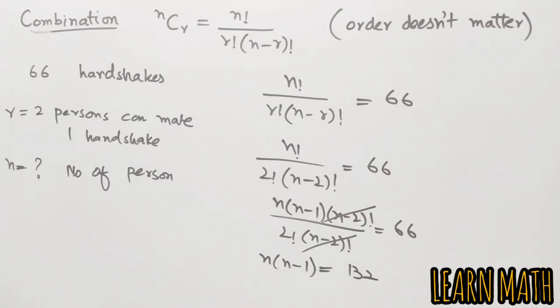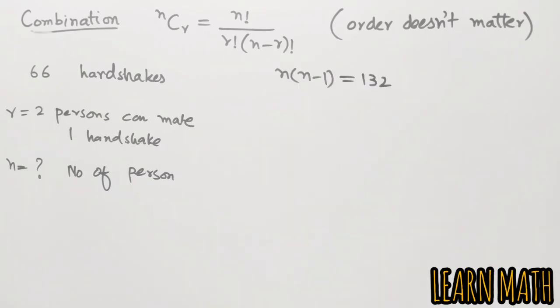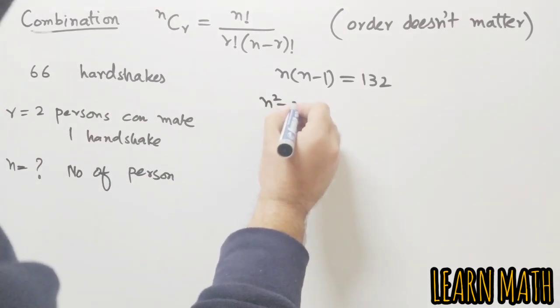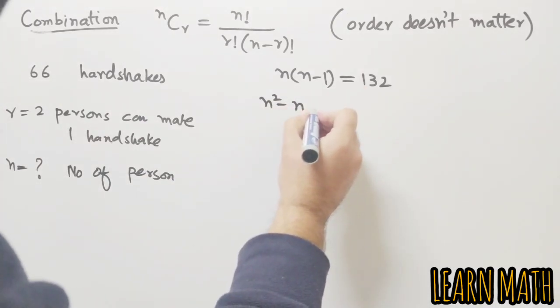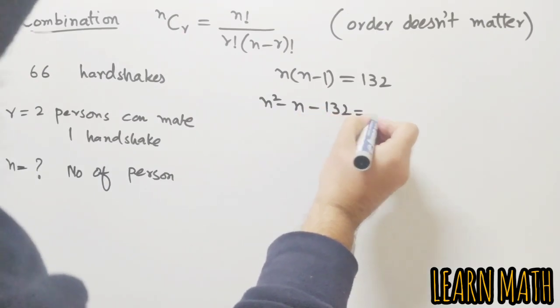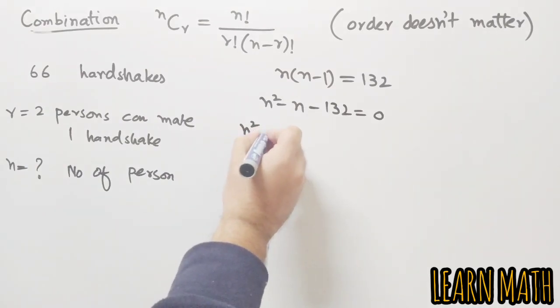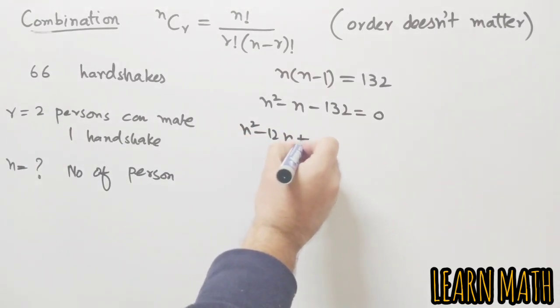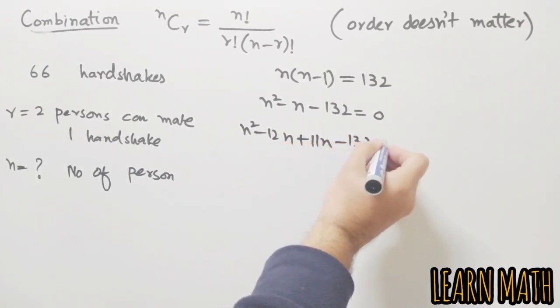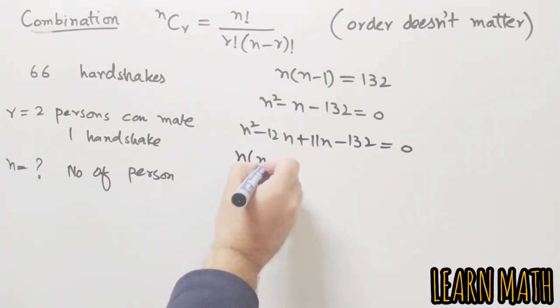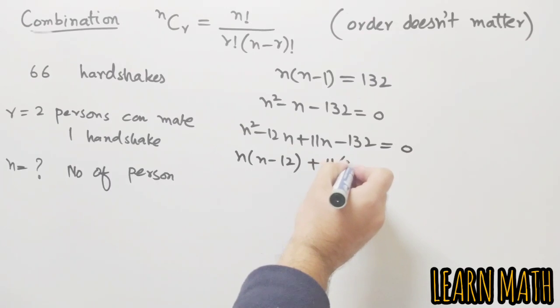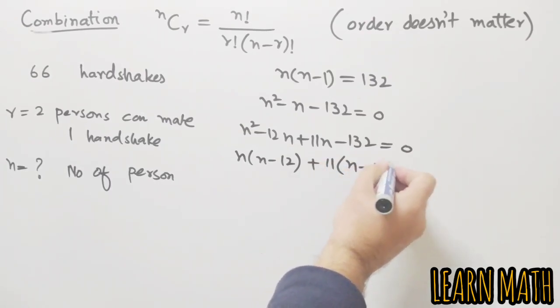Which is again a quadratic equation and we can solve this easily. So the quadratic equation is n squared minus n minus 132 is equal to 0. Now we will factorize this. n squared minus 12n plus 11n minus 132 is equal to 0.